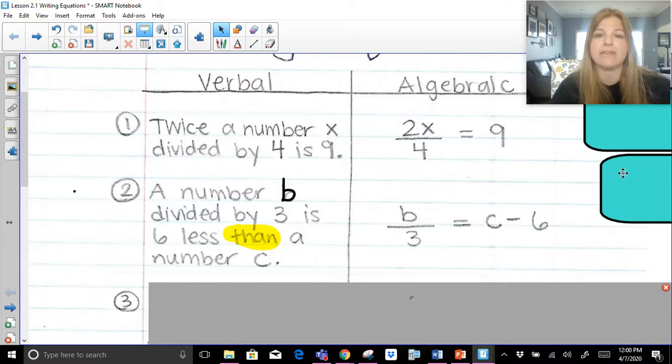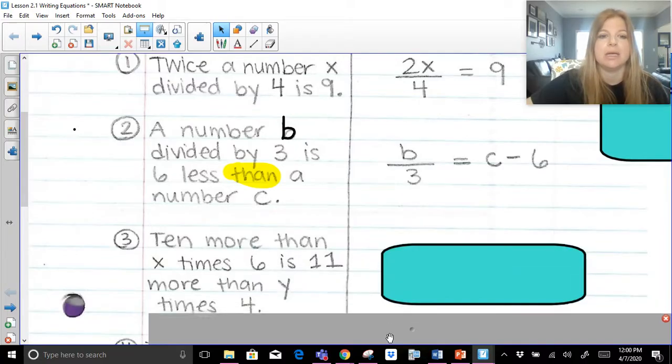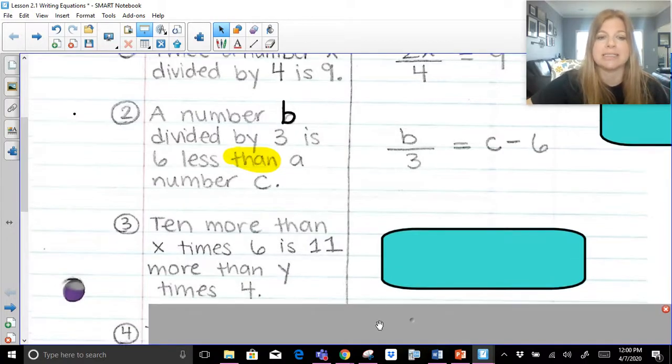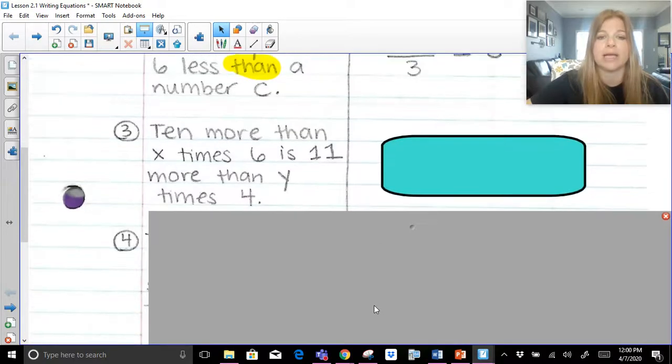If I said 3 less than 7, 3 less than 7 would mean 7 minus 3. So if I say 6 less than c, that means c minus 6. Those can sometimes be a little tricky.